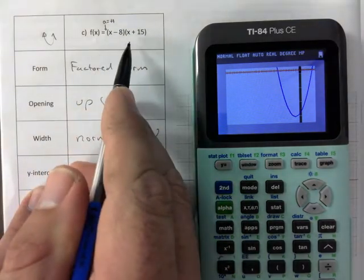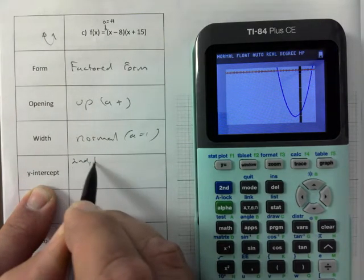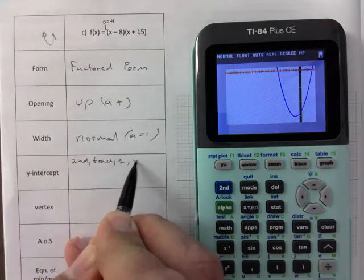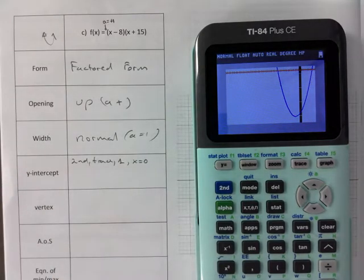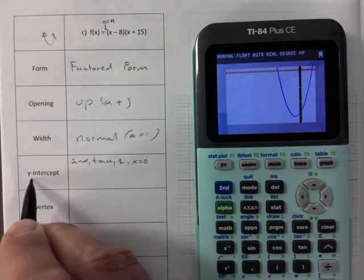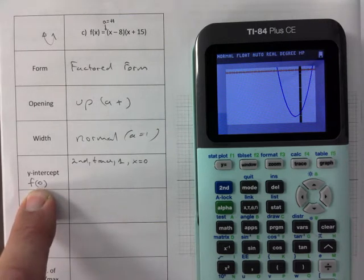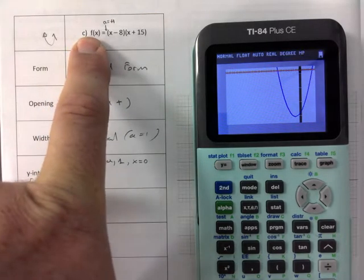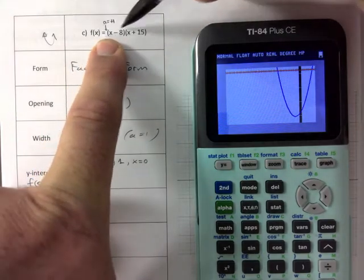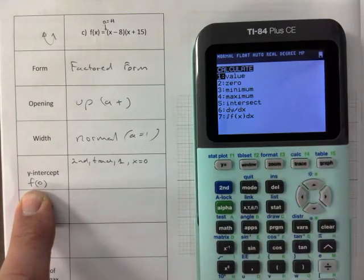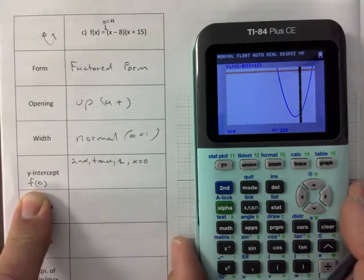The y-intercept, you can't just get it off of that. So you have to go second trace. And here's what I'm going to introduce something new here. Second trace one, right? X is equal to zero. What you are really finding folks is this. You're finding f of zero. Do you remember that? What is he talking about f of zero? You're saying find the y value. Find the y value when x is equal to zero, right?